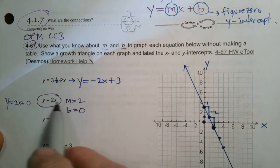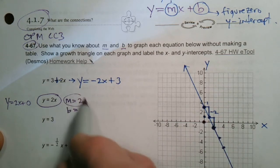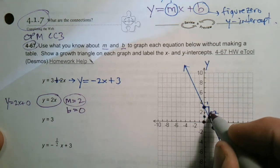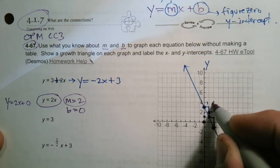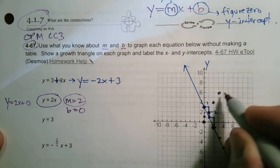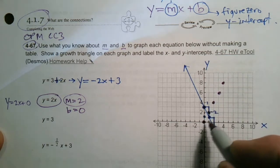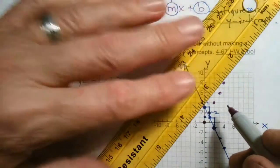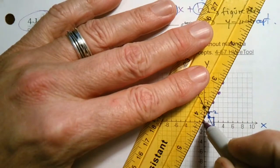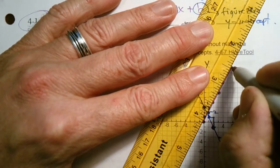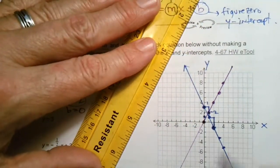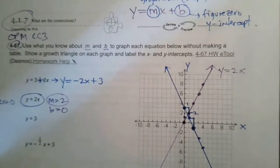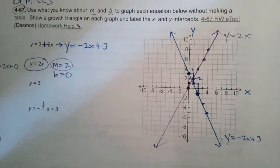From there I use my growth. My growth is 2, so this one's actually going to go up 2, over 1, up 2, over 1. So it's growing, it's increasing. Up 2 over 1, up 2 over 1. Once I have enough points, use my ruler and connect the dots. Nice straight line, arrows, and label it. Y equals 2x.